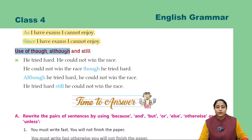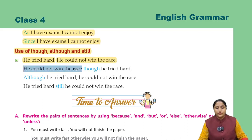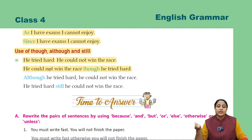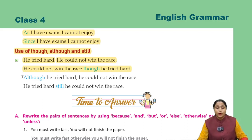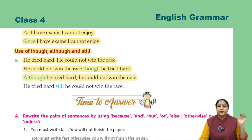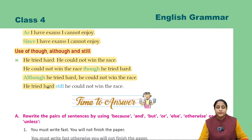Use of 'though', 'although', and 'still'. He tried hard, he could not win the race. He could not win the race, though he tried hard — woh phir bhi race nahi jita, jabki usne bohat mehnat ki thi. Although he tried hard, he could not win the race — usne bohat mehnat ki, phir bhi woh race nahi jit paaya. He tried hard, still he could not win the race.